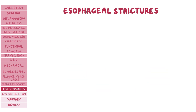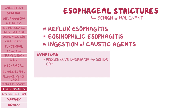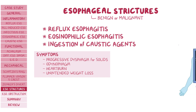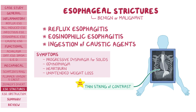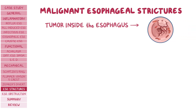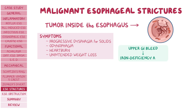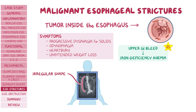Moving on to esophageal strictures, which is the narrowing of the esophagus, they can be subdivided into benign or malignant. Benign esophageal strictures are typically caused by reflux esophagitis, eosinophilic esophagitis, or ingestion of caustic agents, and individuals have symptoms of progressive dysphagia for solids, odynophagia, heartburn, and unintended weight loss. On barium swallow, the stricture causes barium flow to appear as a thin string of contrast. Malignant esophageal strictures are caused by a tumor growing inside the esophagus, with similar symptoms plus possible upper gastrointestinal bleeding leading to iron deficiency anemia. On barium swallow, the narrowing will be irregular due to the irregular shape of tumors.